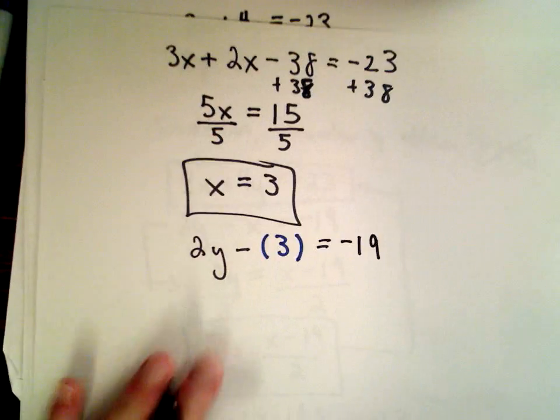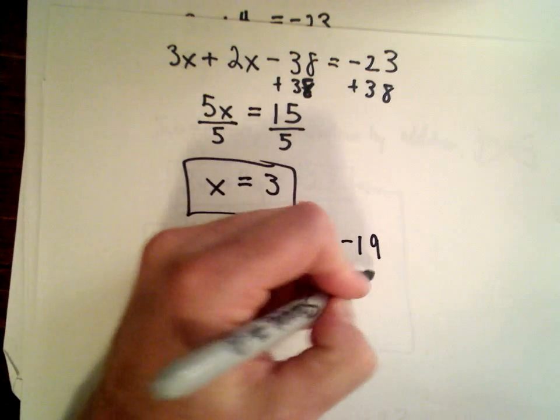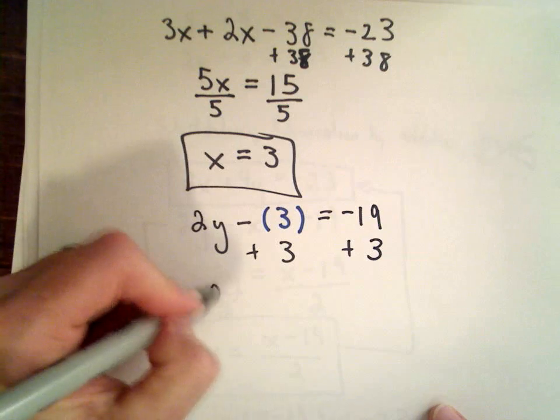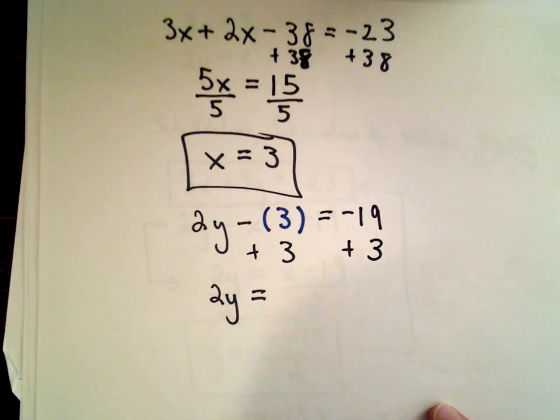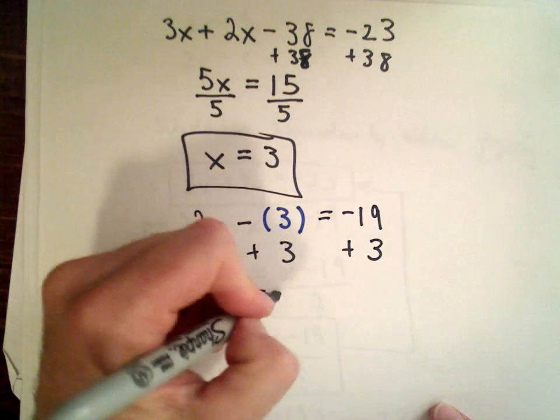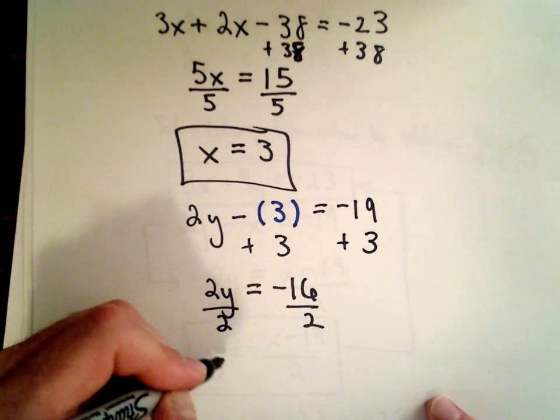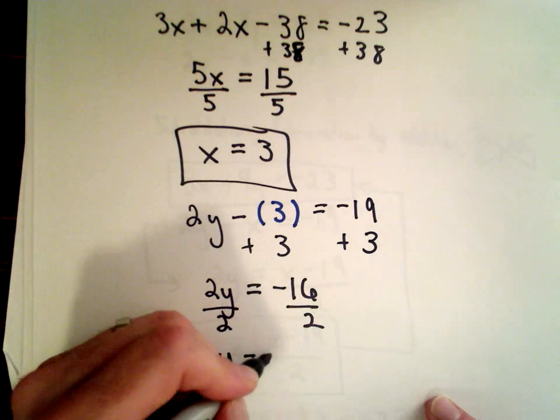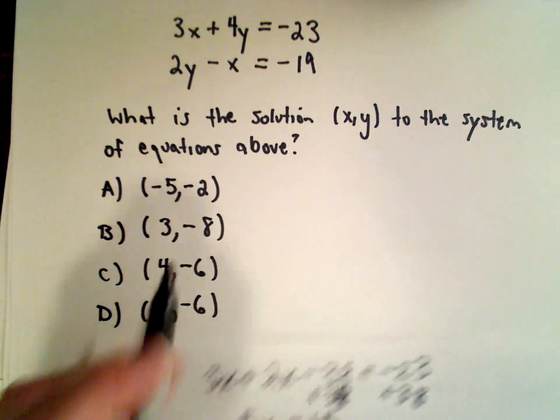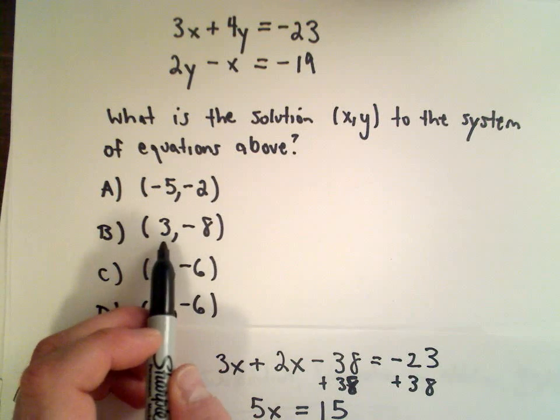Equals negative 19. I'm just trying to solve for y, so I can add 3 to both sides. That's going to give me 2y equals negative 19 plus 3, which is negative 16. Divide both sides by 2, and y equals negative 8. So to confirm, we get 3 comma negative 8, which is answer choice B.